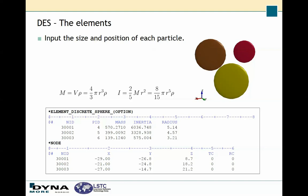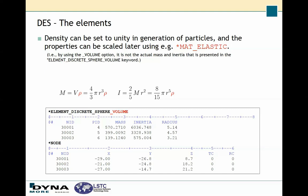The input required for each element is very simple. You have the node which tells us where the particle is, and then each particle is assigned a part ID, a mass, an inertia, and a radius. However, it is much more common to use the volume option on the element discrete sphere keyword. Then density is set to unity in the generation of the particles and the properties can be scaled later using the material card.